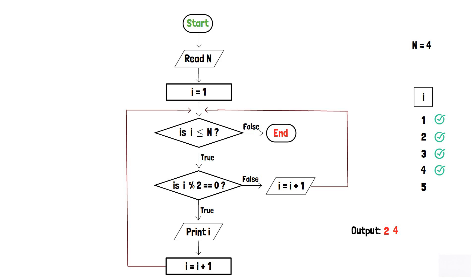At this point, as i is equals to 5, the condition in the first decision box becomes false. That is, 5 is not less than or equals to 4. And thus, the program terminates.